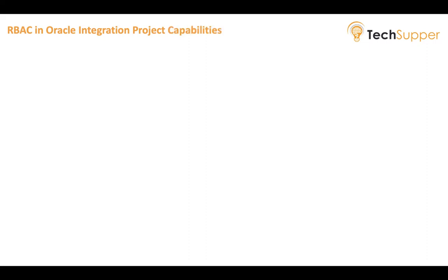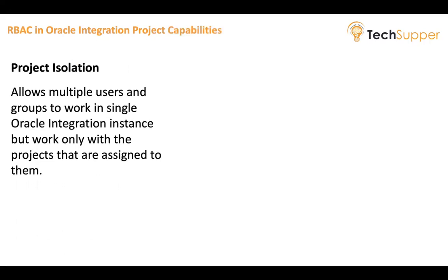What are the capabilities available in RBAC? The first is project isolation. You can isolate all your projects from different users and groups who are working within a single Oracle Integration instance. For example, if you have a single Oracle Integration instance with multiple groups or users intended to create different projects, Project A cannot be visible or editable to another set of users. So you can isolate a project within a single instance, and users can only work with their assigned project.